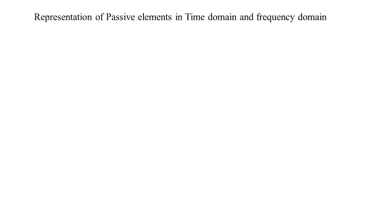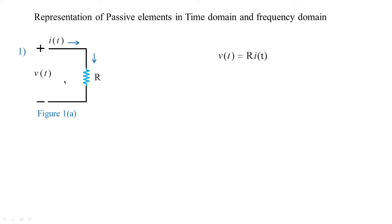Before going into the depth of Laplace transform, first let us see the representation of passive elements in time domain as well as in frequency domain. We will start with the resistor. When a voltage source supplies energy to a resistive element, according to Ohm's law, the voltage developed across resistance is given by V(t) = R·I(t). This representation comes under time domain analysis.